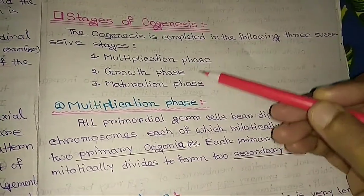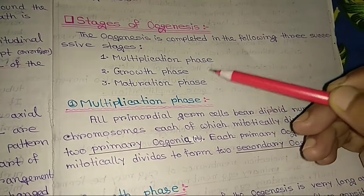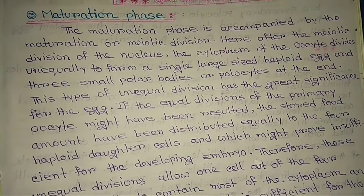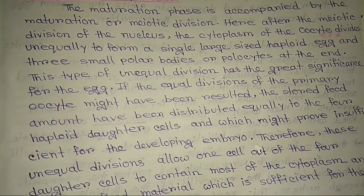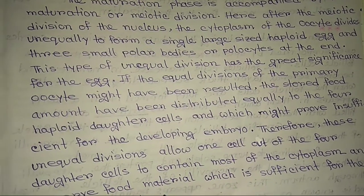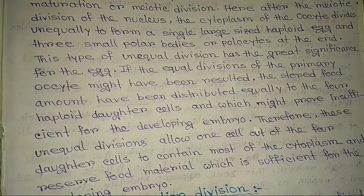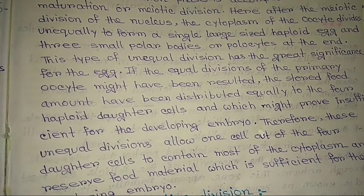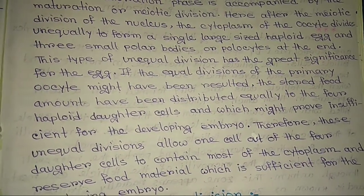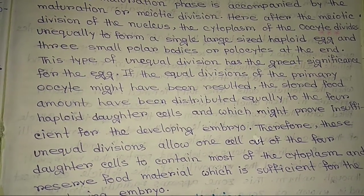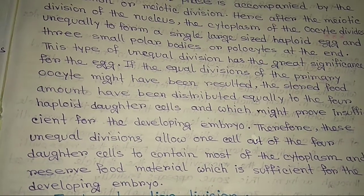The next phase is the maturation phase, which is accompanied by meiotic division. After the meiotic division of the nucleus, the cytoplasm of the oocyte divides unequally to form a single large-sized haploid egg and three small polar bodies or polocytes at the end. This unequal division has great significance: if equal division of the primary oocyte had occurred, the stored food would have been distributed equally to four haploid daughter cells, which might prove insufficient for the developing embryo. These unequal divisions allow one cell to contain most of the cytoplasm and reserve food material sufficient for the developing embryo.